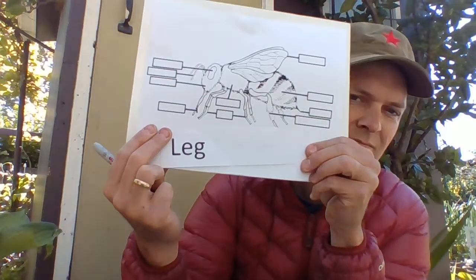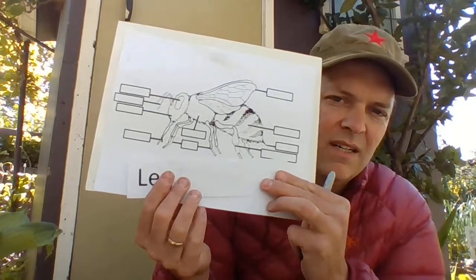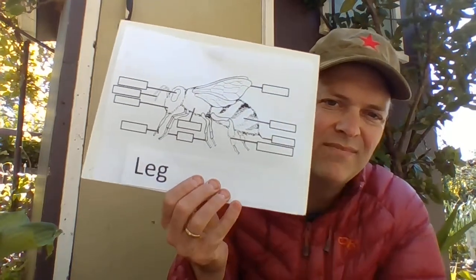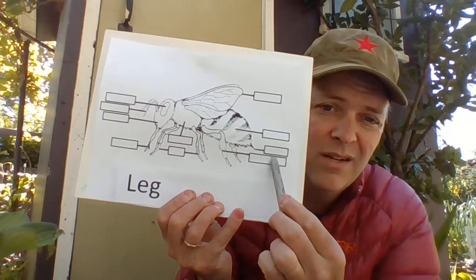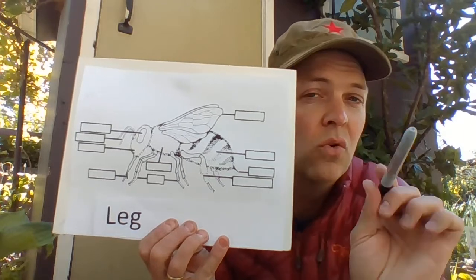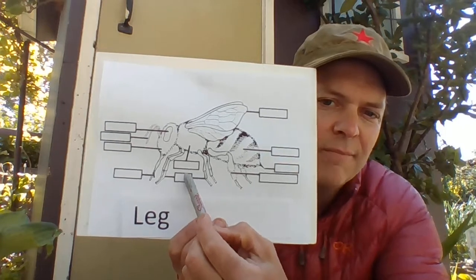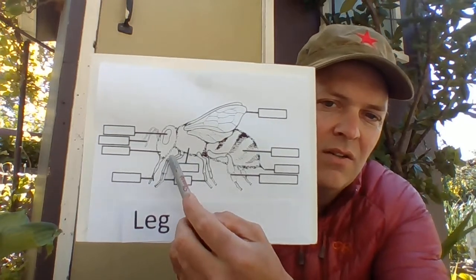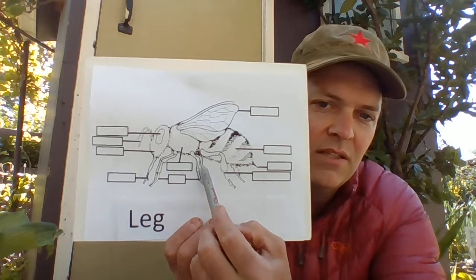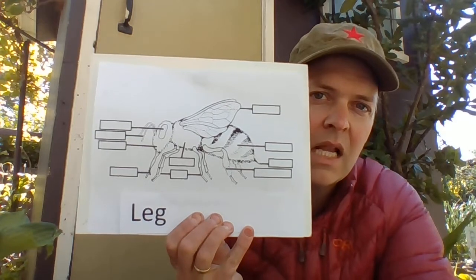A leg — we can spell that. Now don't get confused here because there are two boxes that point at legs. This back one kind of points to the leg, but it's actually pointing to something else — don't put your leg answer on that one. Leg should go right in here; it's actually pointing to two front legs and two of the middle legs. So write leg right in that box there: L-E-G.